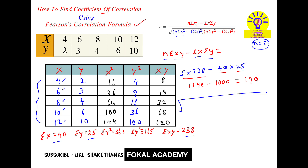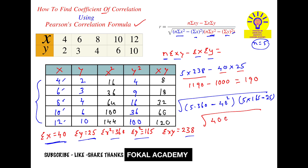Next, calculate the denominator, which is the square root of: n times summation of x squared minus summation of x whole squared, multiplied by n times summation of y squared minus summation of y whole squared. Substituting: 5 times 360 minus 40 squared, times 5 times 165 minus 25 squared. Using a calculator, this value becomes 40000, and taking the square root gives 200. So the denominator is 200.